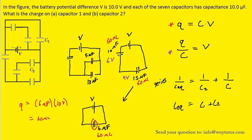We continue moving backwards through the circuit, this time from the 15 microfarad capacitor back to the two it came from. We're moving backwards to a parallel arrangement — when moving backwards to parallel, you bring the voltage, not the charge. So we bring back the 4 volts and place it on both capacitors. We calculate the charge on each: 5 microfarads times 4 volts gives 20 microcoulombs, and 10 microfarads times 4 volts gives 40 microcoulombs.